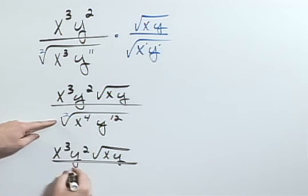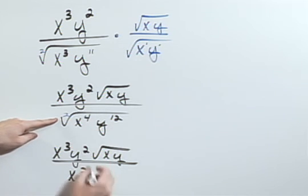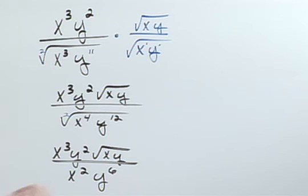The square root of x to the fourth is going to be x squared, and the square root of y to the twelfth would be y to the sixth.